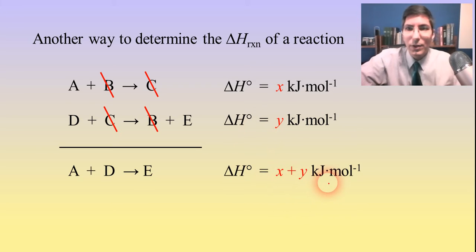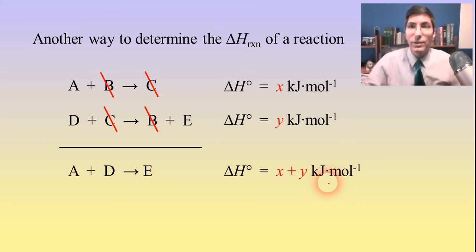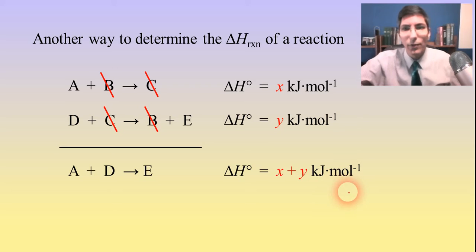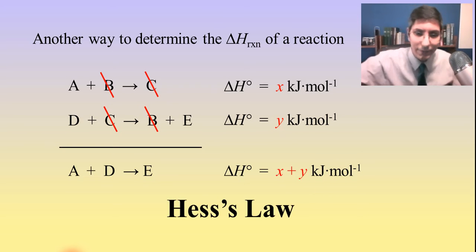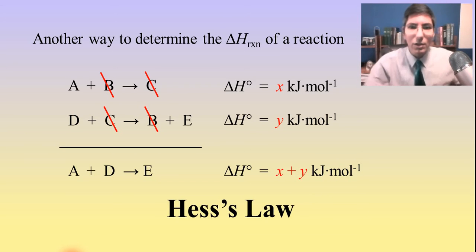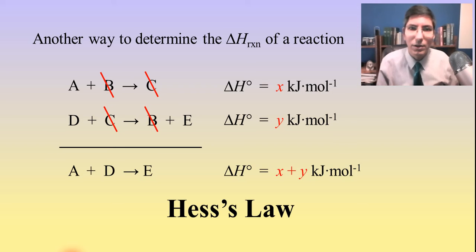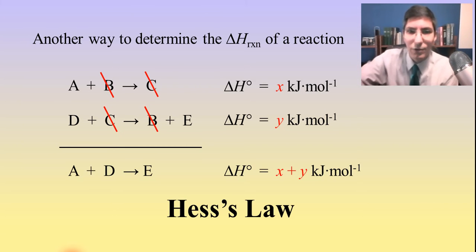This is a pretty useful way to calculate the delta H of more complex chemical reactions. This is something we call Hess's law, and we're going to use Hess's law in this video to calculate delta H of a few different reactions.